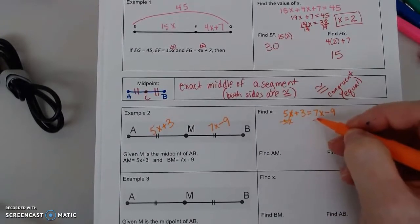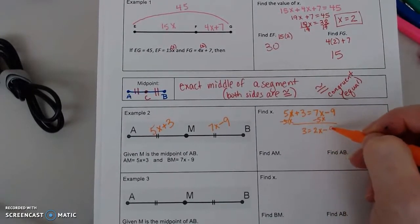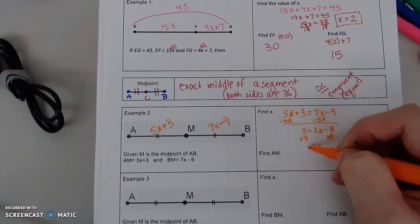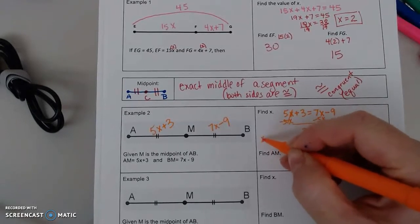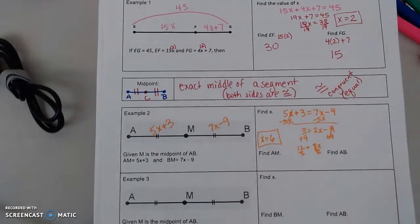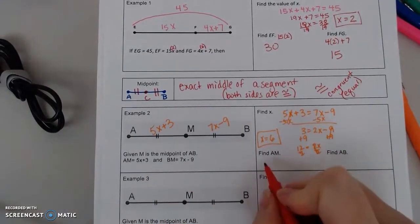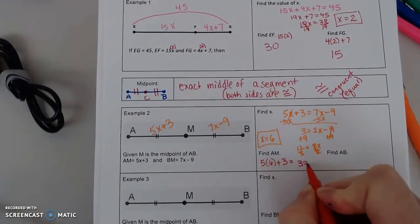I'm going to subtract 5X. So 3 equals 2X minus 9. I'll add 9. So 2X equals 12, and divide by 2. So X equals 6. So then, if I want to find AM, I've got 5X plus 3, which gives me 33.